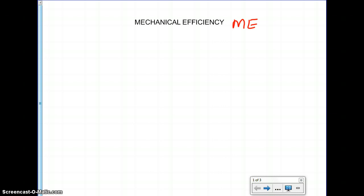The formula for mechanical efficiency is output work divided by input work. In class you've probably seen me abbreviate that as WO over WI.